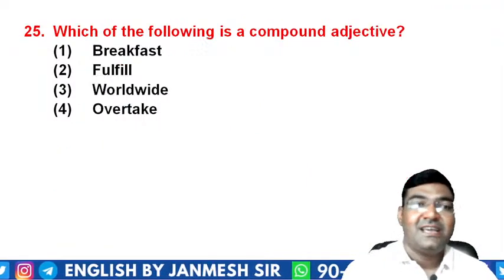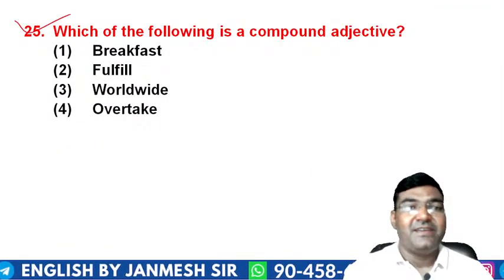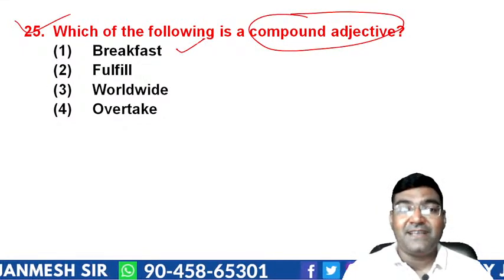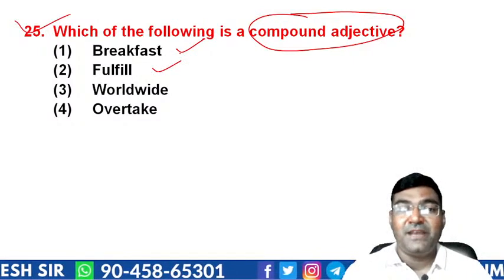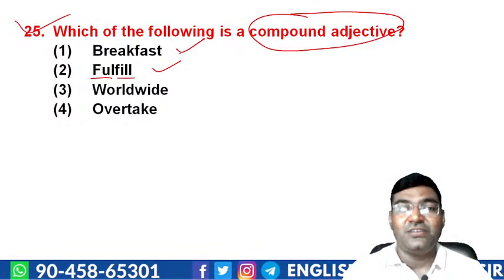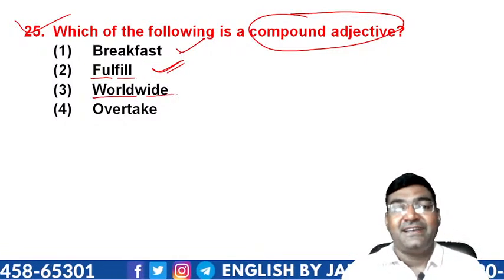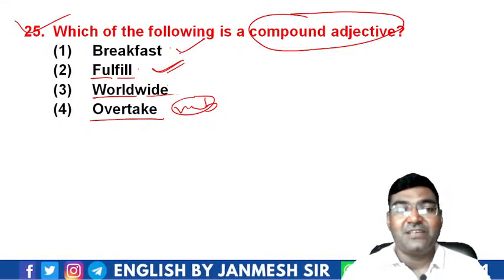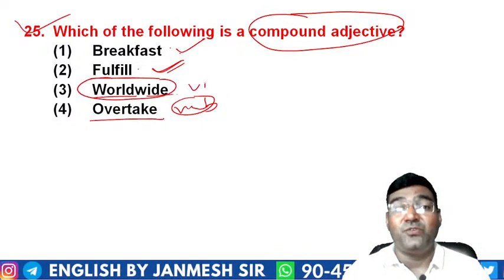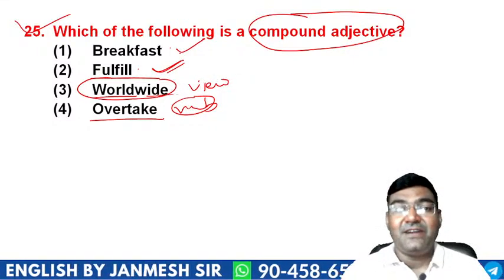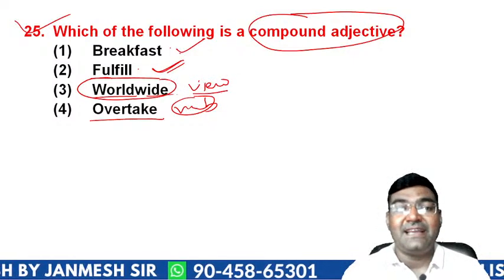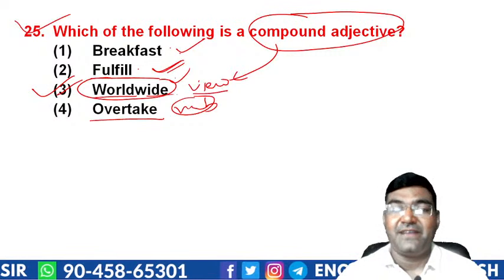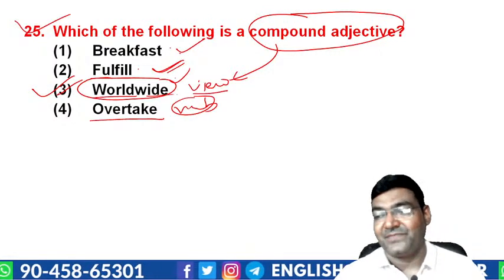Question 25: which of the following is a compound adjective? Options are 'breakfast', 'fulfill', 'worldwide', or 'overtake'. 'Breakfast' is a compound noun, 'fulfill' and 'overtake' are compound verbs. 'Worldwide' is formed from 'world' and 'wide', and it comes before a noun — like 'worldwide view' or 'worldwide opinion' — so it functions as a compound adjective. The answer is option 3 — 'worldwide'.